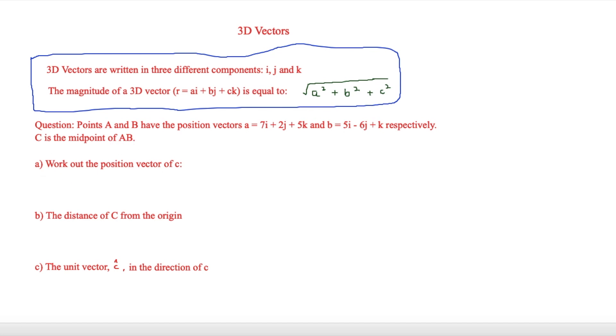So first of all we have to work out the position of c. In order to do this we're going to use the way we find out a midpoint and we're going to first start looking at the i's. So we'll put 7 plus 5 over 2 and then that is our i component. And then we'll start looking at the j's, here we have 2j minus 6j, so 2 minus 6 over 2.